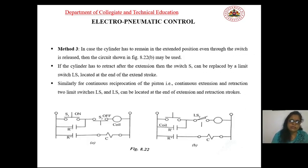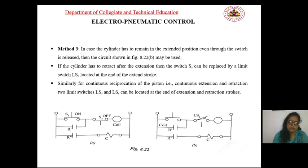In Method 3, the cylinder has to remain in the extended position even after the switch is released. You can observe the circuit diagram for this case. If the cylinder has to retract after extension, the switch S can be replaced by a limit switch LS located at the end of the extended stroke.